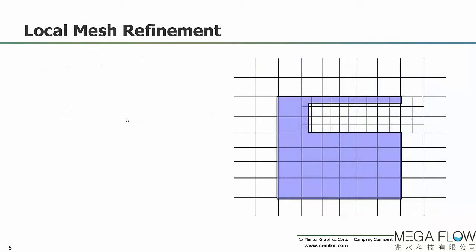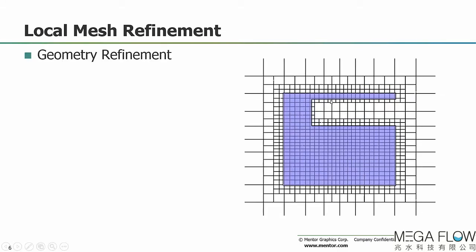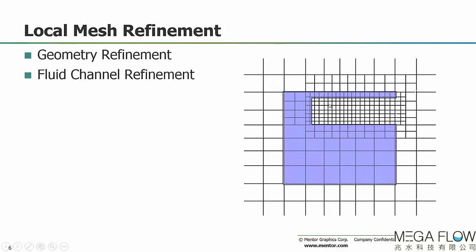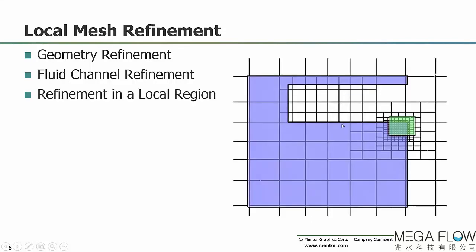Once the global mesh generation process is complete, we can further control the mesh through local mesh refinement. Looking at a simple notched block with a standard mesh level and just a few grid cells in the channel, the ways to control the mesh locally are: by geometry — adding mesh within the solid; by fluid channels — addressing them explicitly with a local mesh refinement setting; and by local regions — using a second object to specify mesh in a specific area.